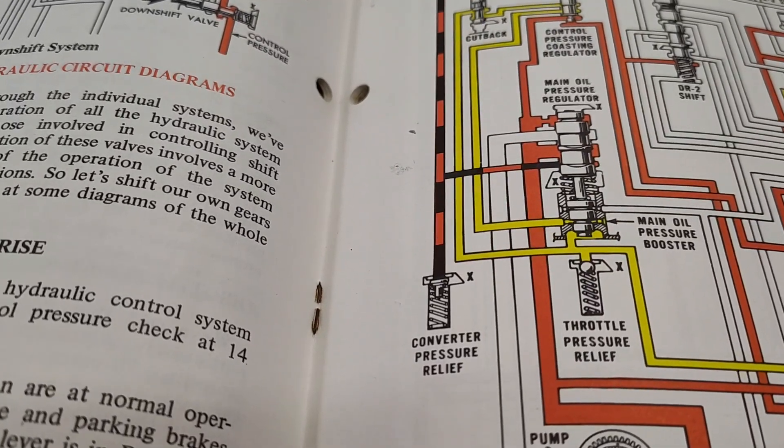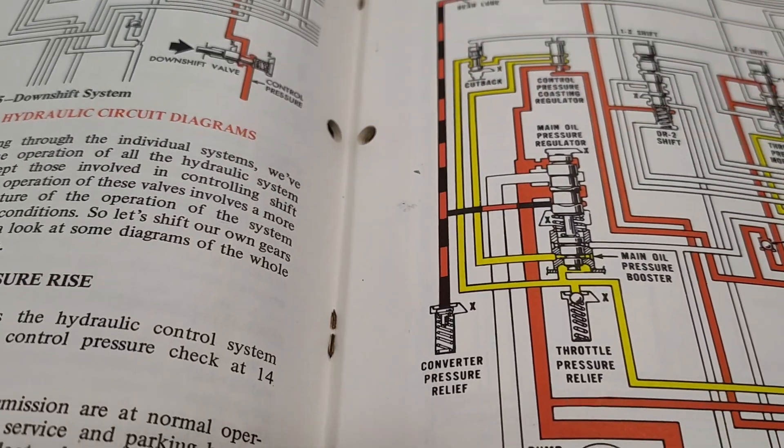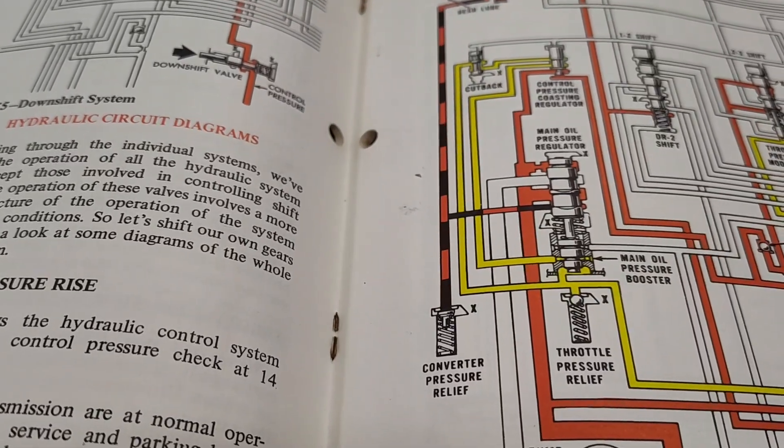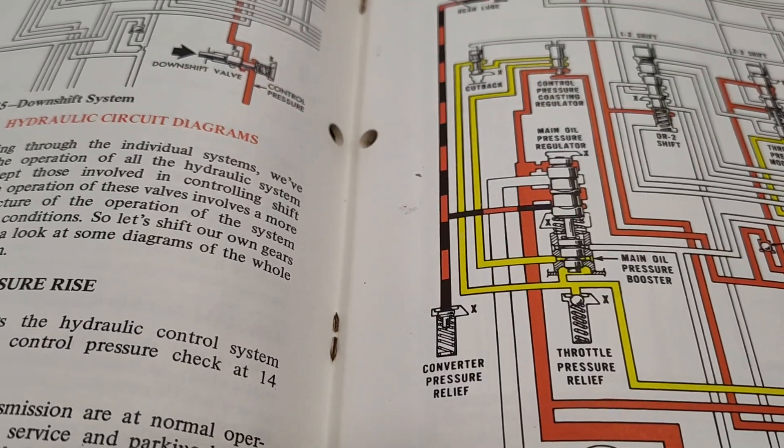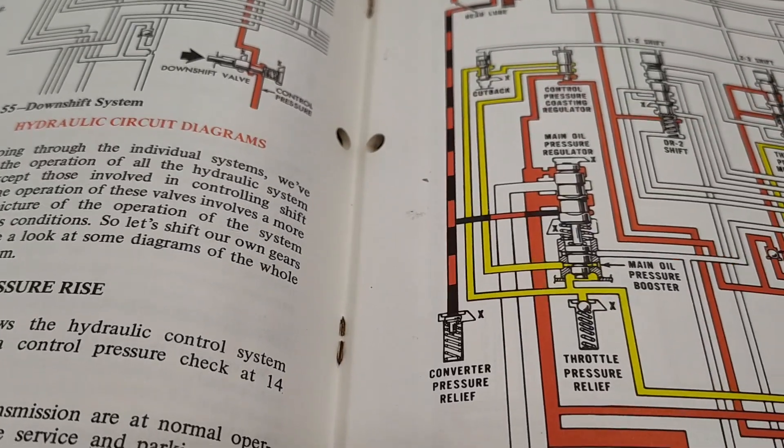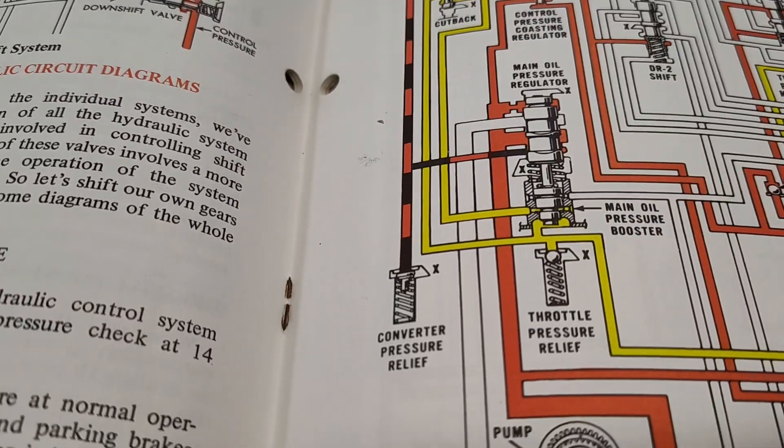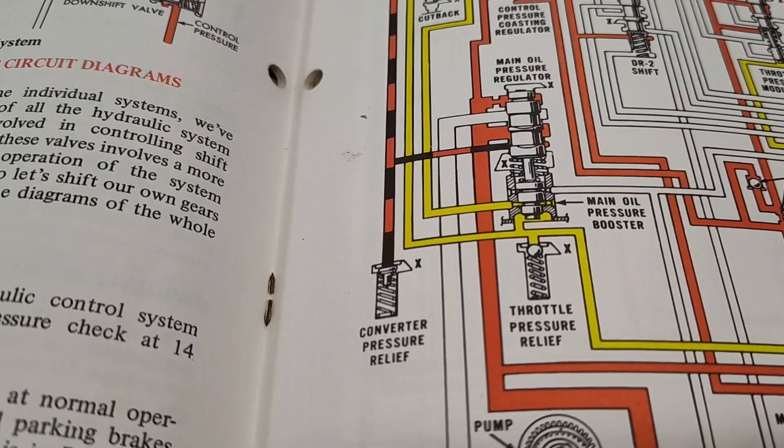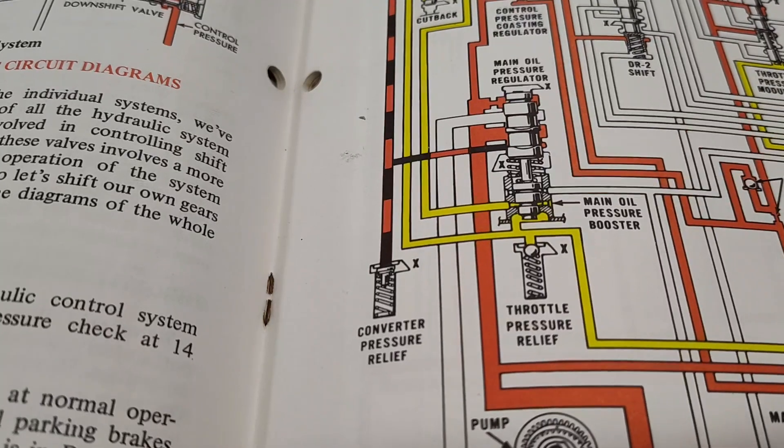So I hope that helps you because a lot of people wonder, well geez, why am I getting this variation? Is there a leak somewhere? Is something wrong? No, nothing's wrong. It's just the spring rate is changing primarily. And yes, you are overcoming some leaks. Don't forget all these units leak. I don't care how good you built them or how new they are, they all have leaks internally.